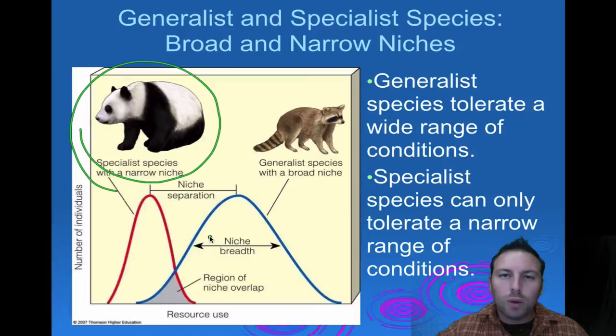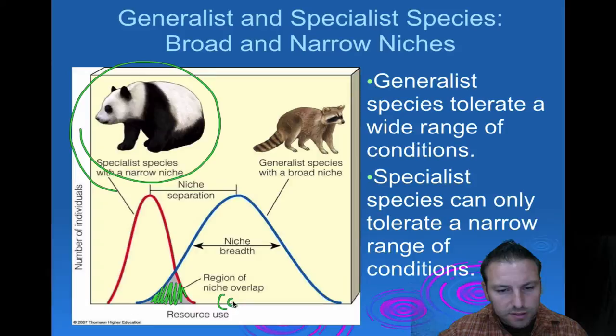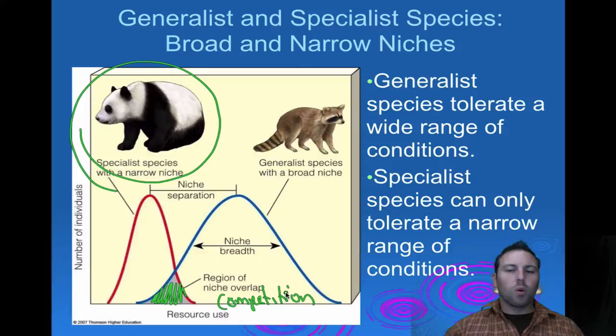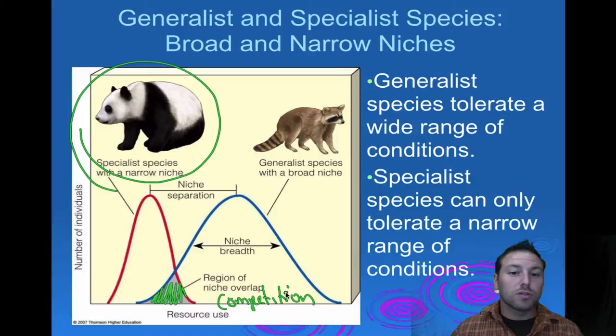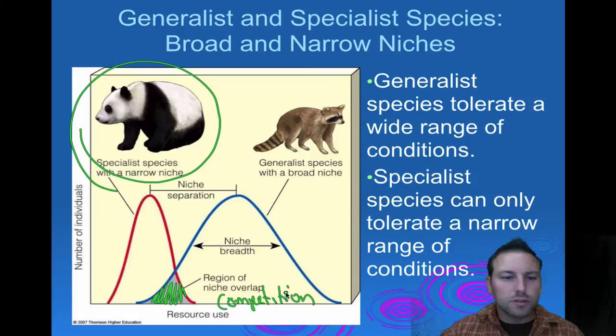The farther these two curves are away from each other, the less chance there is for competition. Where we have overlap, this is going to lead to competition in that region. Organisms will try to minimize that overlap to avoid competition, allowing different species to exploit their environment in different ways. In summary, generalist species tolerate a wide range of conditions and survive change better than specialist species, which can only tolerate a narrow range of conditions.